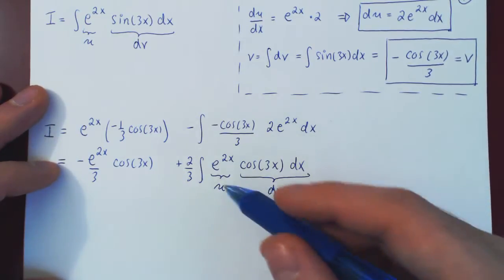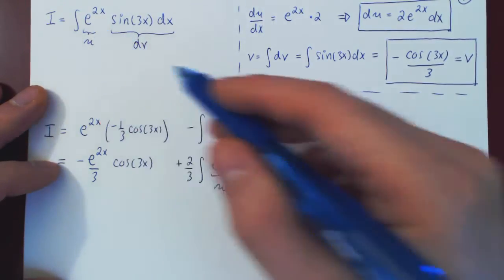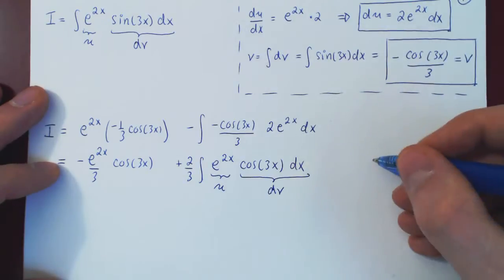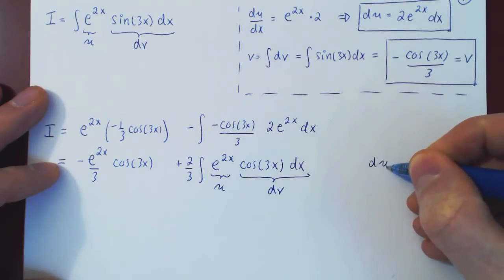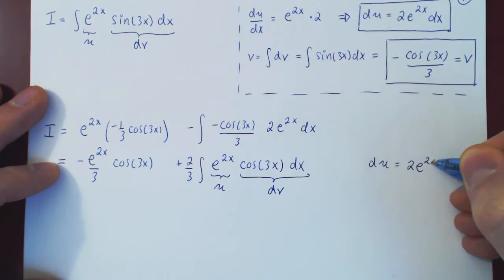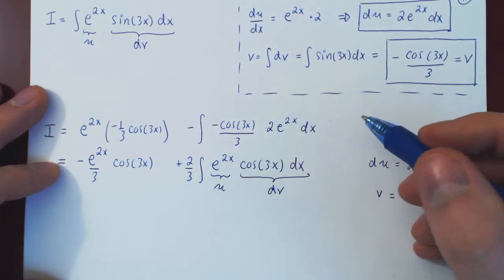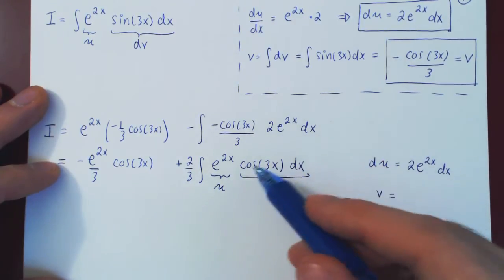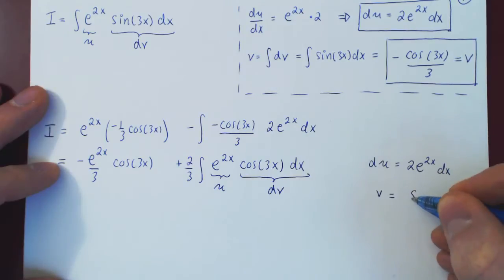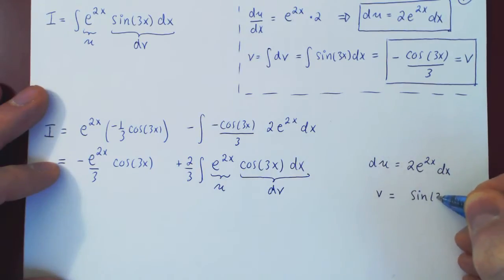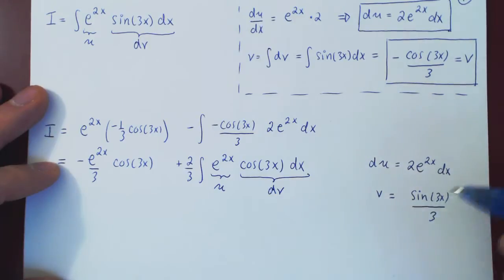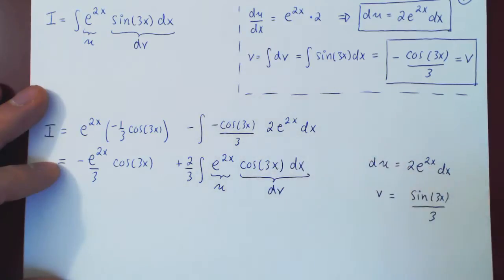Since u is the same as before, du is still 2e to the 2x dx. To get v, we integrate dv: the integral of cosine of 3x dx gives sine of 3x over 3. If you're not clear about this, differentiate sine of 3x over 3 and you will obtain cosine of 3x.